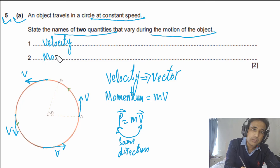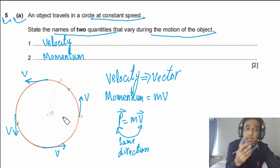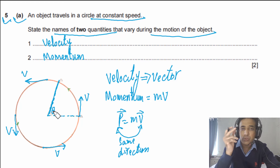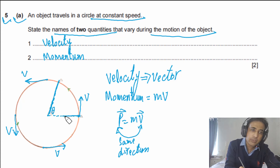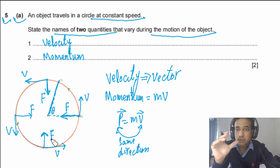So momentum is the second quantity that keeps changing during the circular motion. We can also talk about angular displacement — its magnitude keeps changing as the object moves around the circle. Additionally, the direction of the resultant force changes: when the object is at one point the force points inward in one direction, and as it moves around the circle that direction rotates. So the resultant centripetal force is also changing.